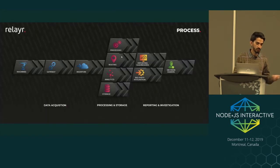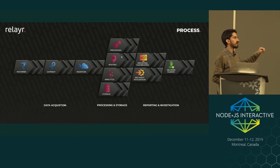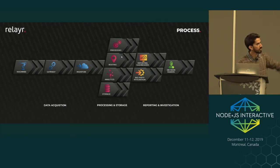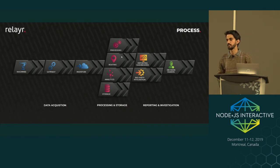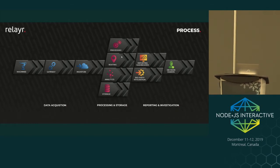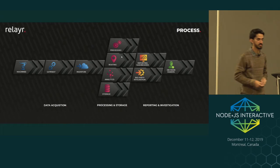Our process is like this: we have sensors on machines, then there's a gateway, and then we ingest the data in our cloud where we do processing, analytics, and storage. Then we have dashboards and mobile apps where the client can see what's happening with their devices. This puts us in a situation where we have a lot of asynchronous communication from devices sending data through MQTT, Kafka, or even HTTP protocols.